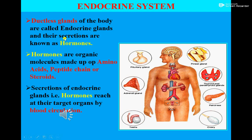Students, you have studied about glands. Glands are basically aggregations of specialized cells that secrete chemical substances to perform different functions in the body. In our body, there are two types of glands: number one, the exocrine gland, and number two, the endocrine glands.